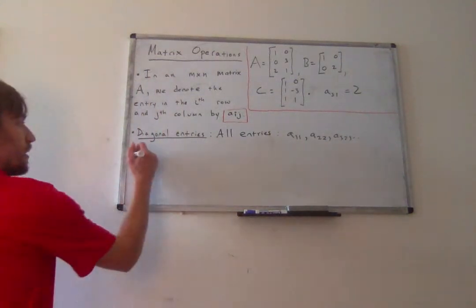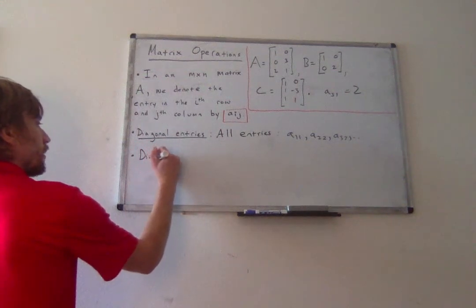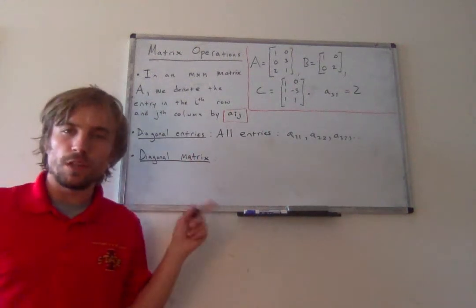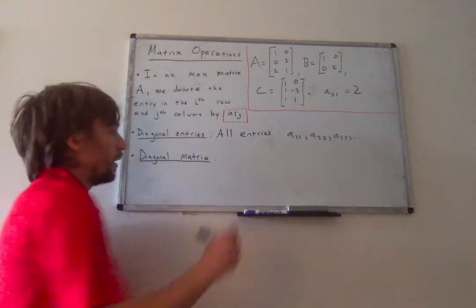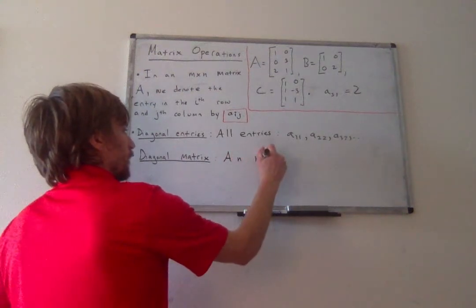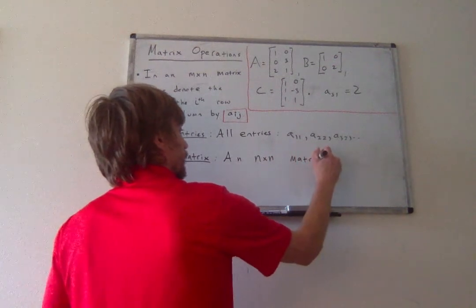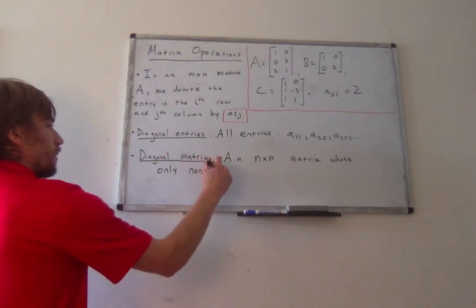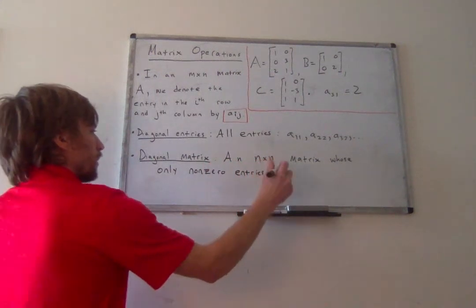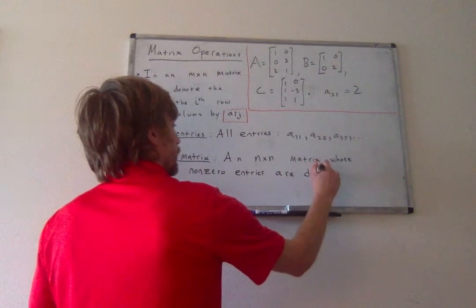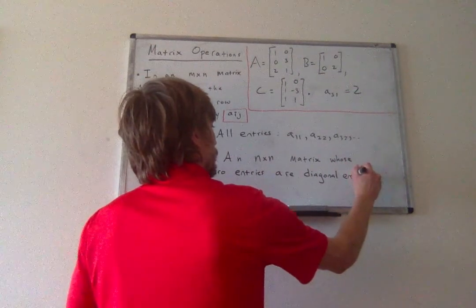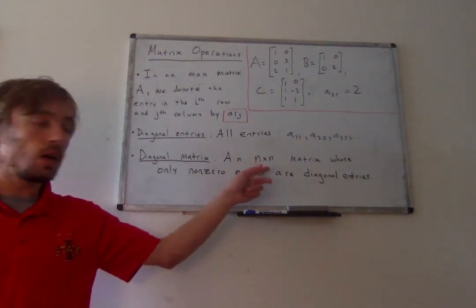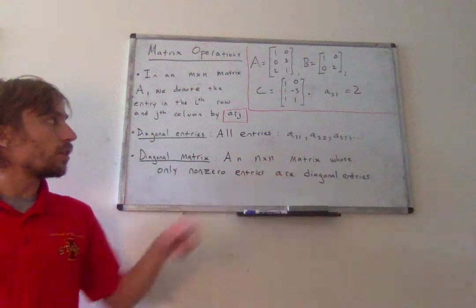Alright, B is also, as it turns out, a diagonal matrix. And this will be a very important matrix. B in specific won't be a very important matrix. Diagonal matrices won't be very important. So a diagonal matrix is an n by n matrix, so a square matrix, again, same number of rows and columns,